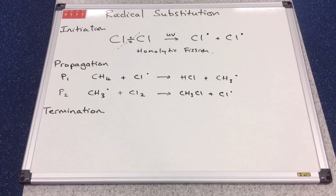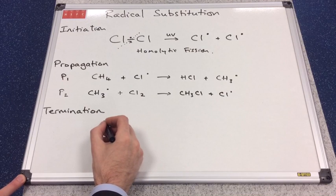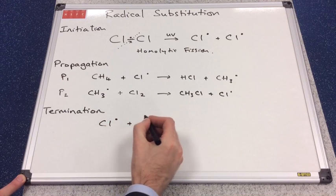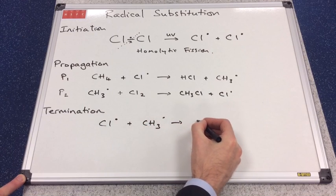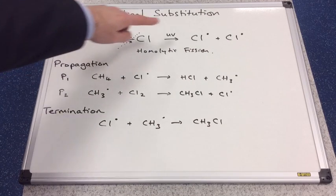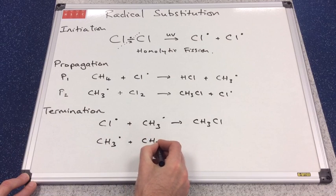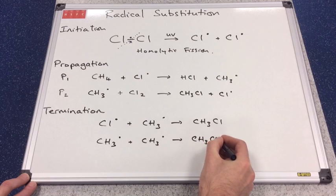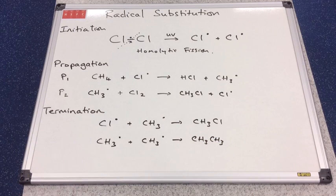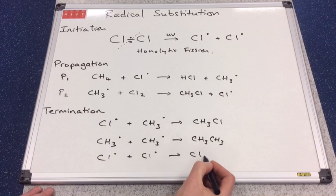The final part of the mechanism is the termination stage, where any two free radicals combine to form a stable molecule. For example, a chlorine radical and a methyl radical combine to produce CH₃Cl. Two methyl radicals combine to form ethane (CH₃CH₃) — this is why exam questions may ask why small traces of ethane are produced. Two chlorine radicals can also combine to produce stable Cl₂.